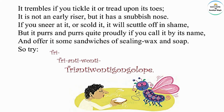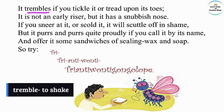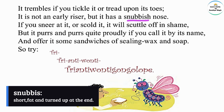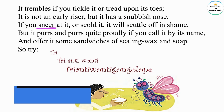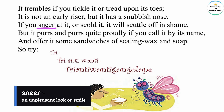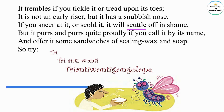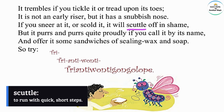It trembles if you tickle it or tread upon its toes. Tremble means shake. It is not an early riser, but it has a snubbish nose. Snubbish means short, fat, and turned up at the end. If you sneer — sneer means an unpleasant look or smile — at it or scold it, it will scuttle off in shame. Scuttle means to run with quick, short steps.